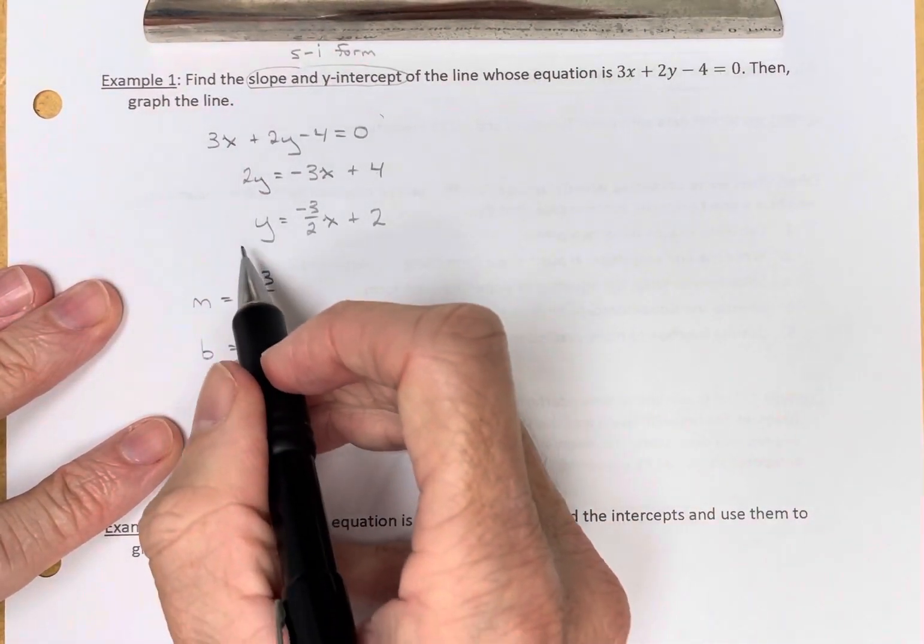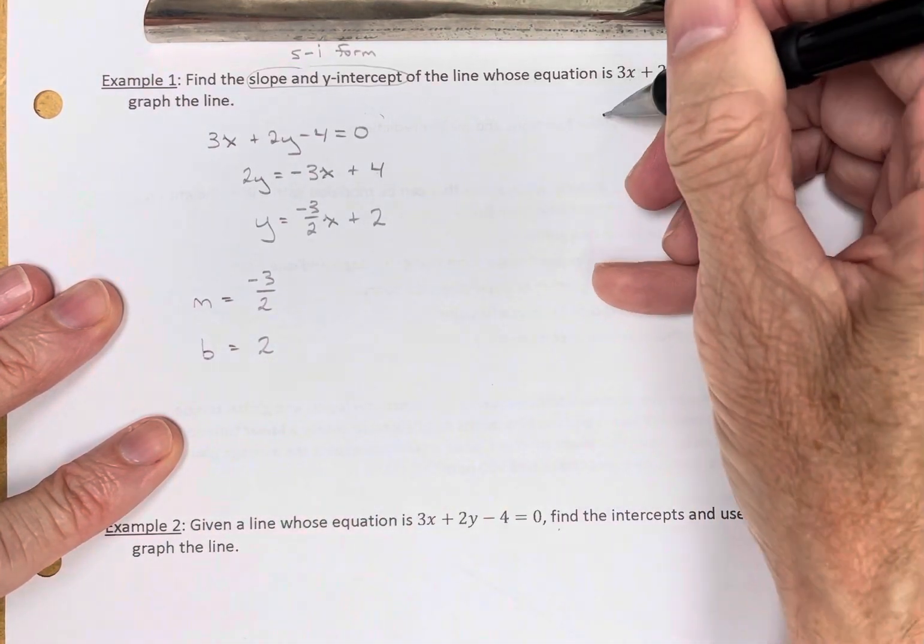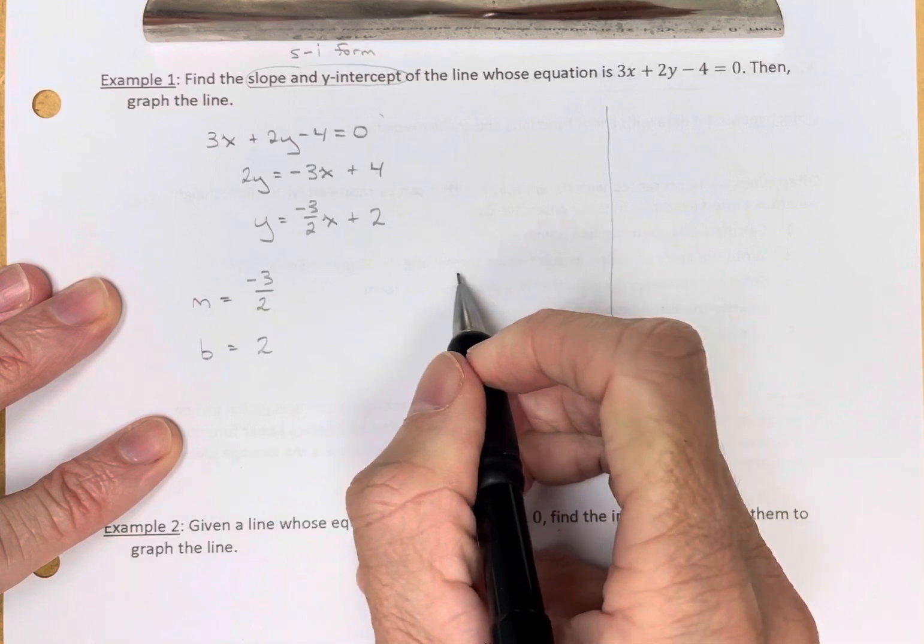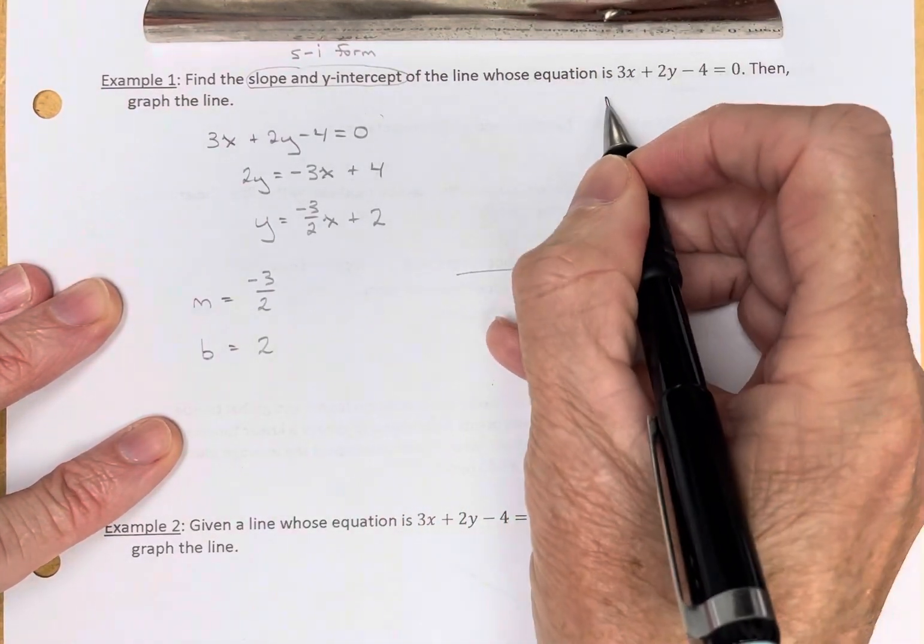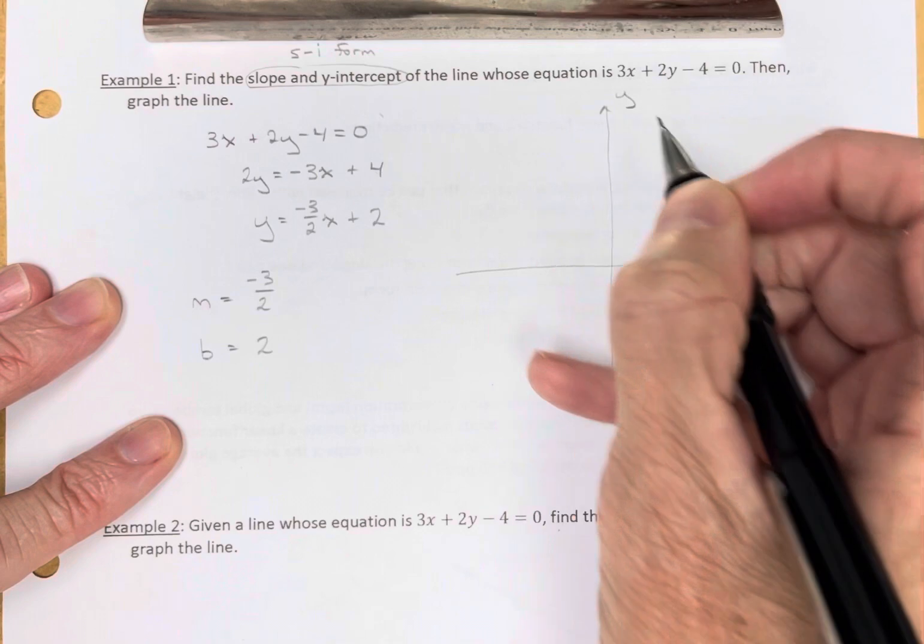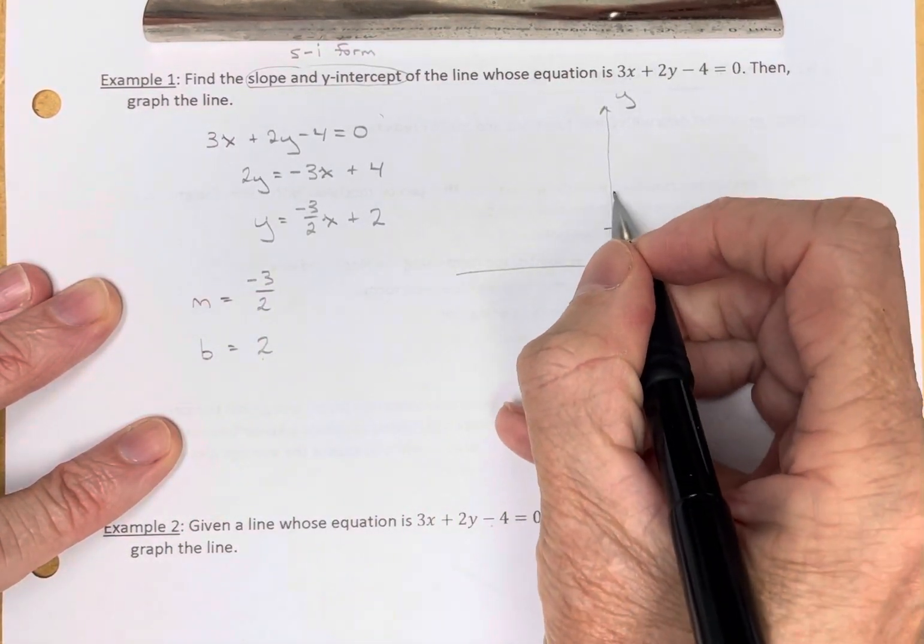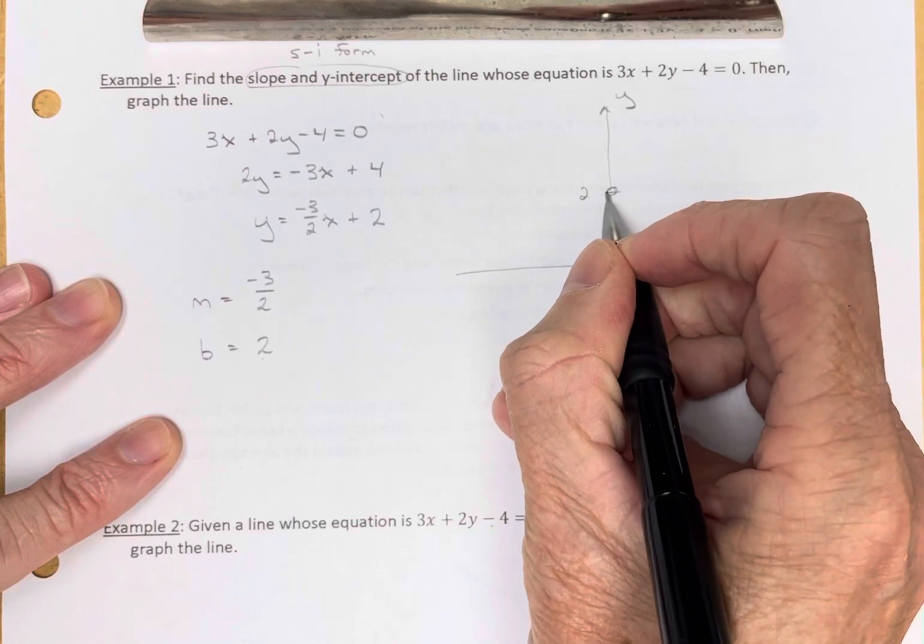So let's graph it. Again, it's easy to graph in the slope-intercept form. This is my x-axis and my y-axis. My y-intercept is positive 2, so we'll go up 2 and put a point.